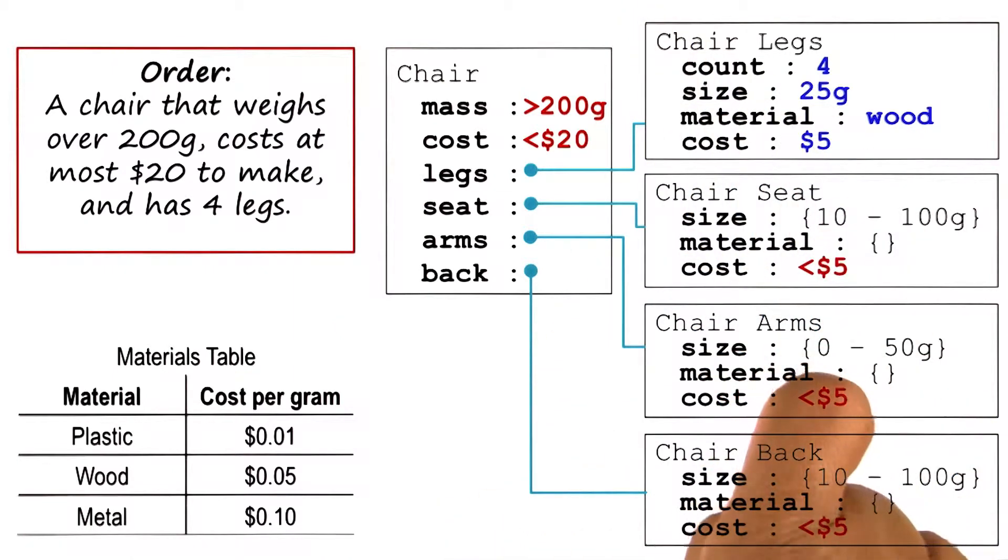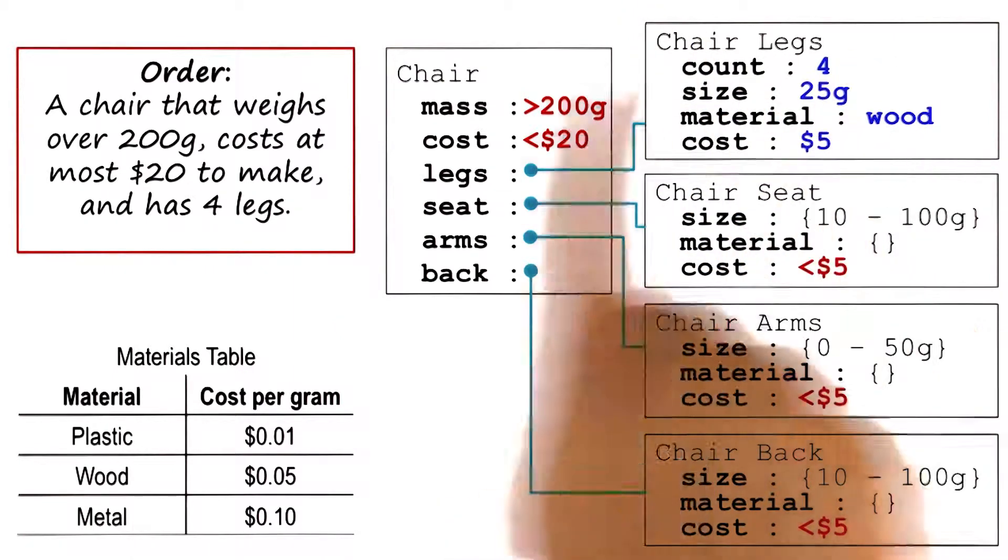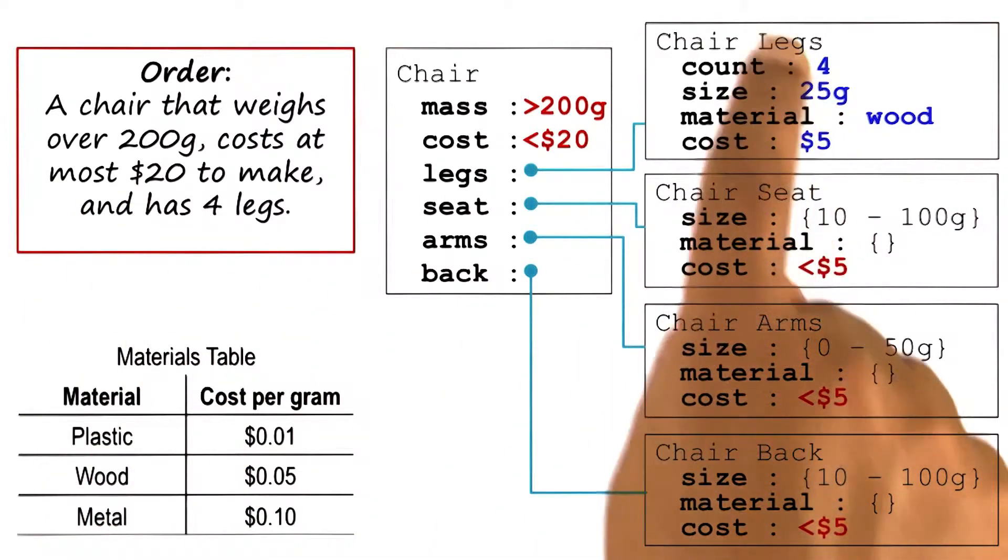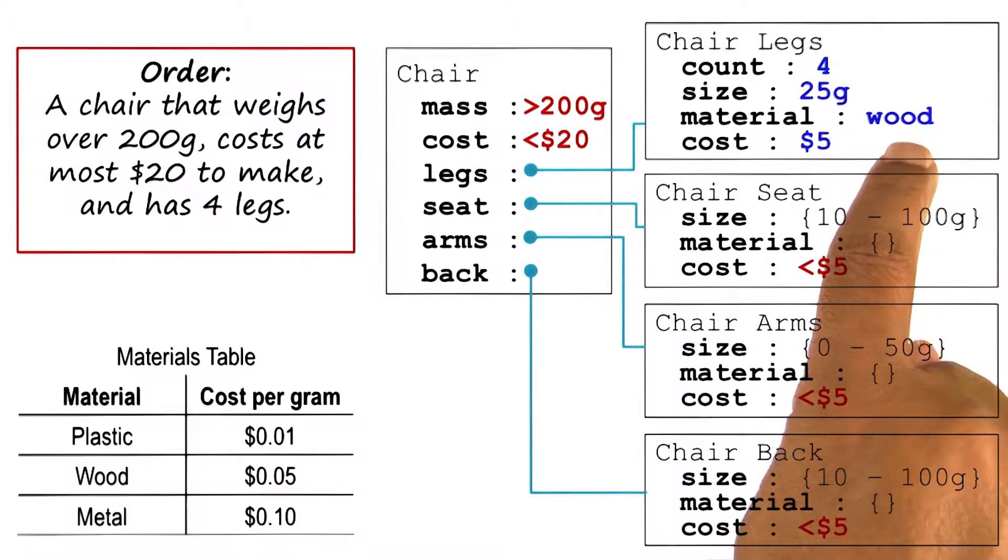Consider the component legs, for example. We already know the count, four, from the input specification. We know the cost, no more than $5 from the higher level plan. Now we can design the values of the other two variables, 25 grams and wood, for example.